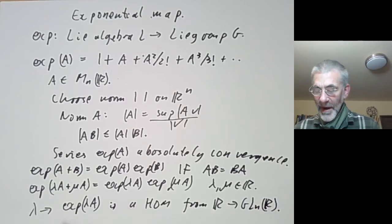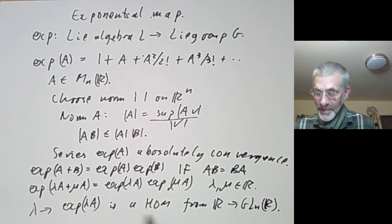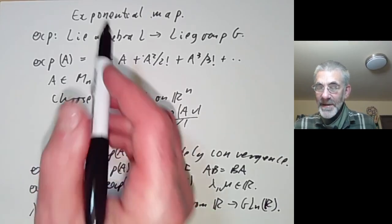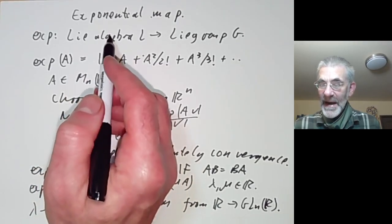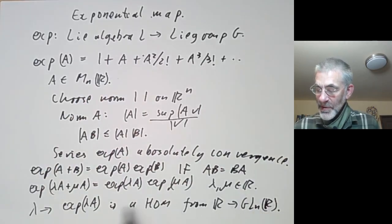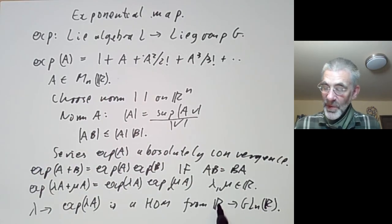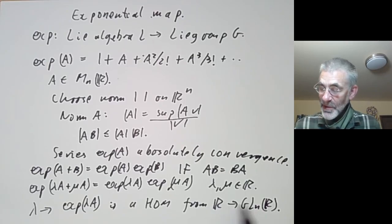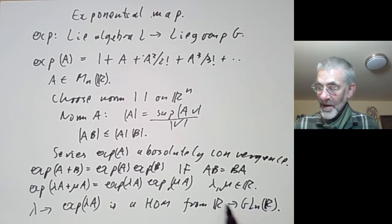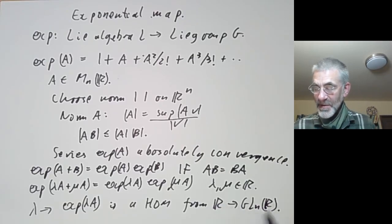In other words, the exponential map turns elements of the Lie algebra into one-parameter groups in GL(ℝ) — that means a homomorphism from the reals to the group.